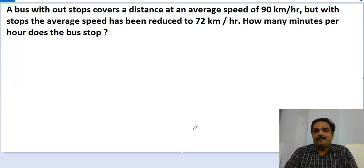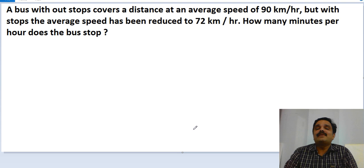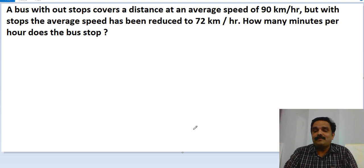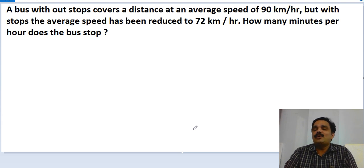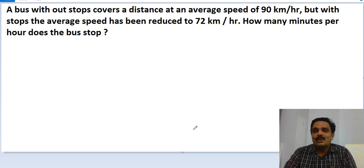First, read the problem properly. A bus without stops covers a distance at an average speed of 90 kilometers per hour, but with stops the average speed is reduced to 72 kilometers per hour. The question is: how many minutes per hour does the bus stop? The speed is reduced because of the stops.